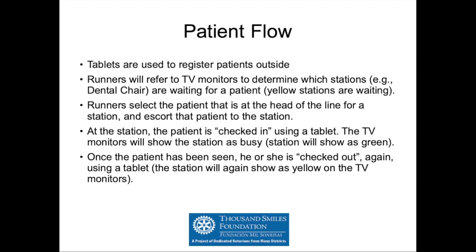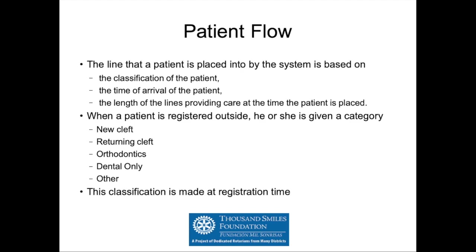Tablets are used to register patients outside. Runners will refer to TV monitors to determine which stations are waiting for a patient. If the top child in the line is yellow, that means the station is waiting, and that will be the patient taken by the runner to the station. At the station, the patient will be checked in using the station application, and the TV monitors will show the station as busy — indicated by the checked-in child displaying in green. Once the patient has been seen, they are checked out, and the station reverts back to yellow, indicating the next child to be brought up. Scheduling places children into lines based on the classification of the patient, the time of arrival, and the length of the lines.